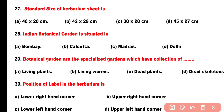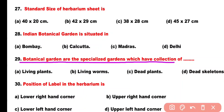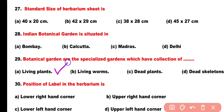Question number 29. Botanical gardens are specialized gardens which have a collection of: Option A: Living plants, Option B: Living worms, Option C: Dead plants, Option D: Dead skeletons. Correct answer is Option A. Botanical gardens are specialized gardens which have a collection of living plants.